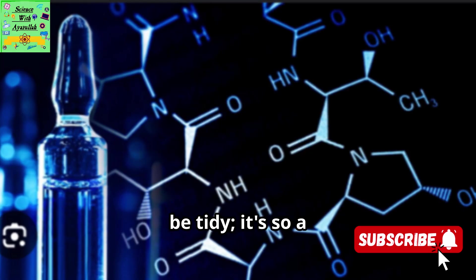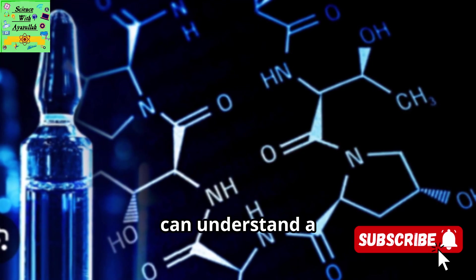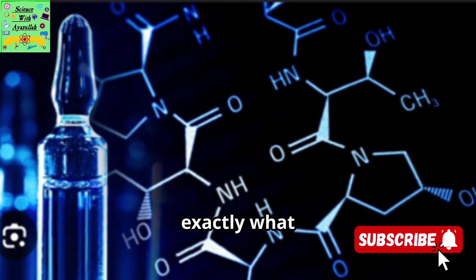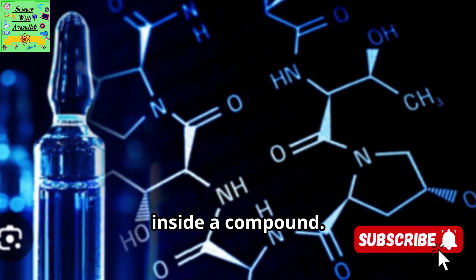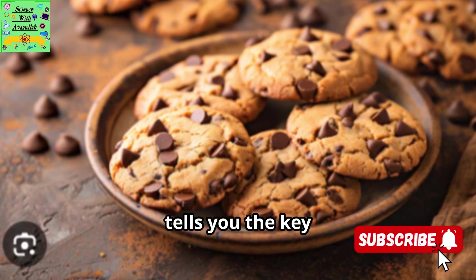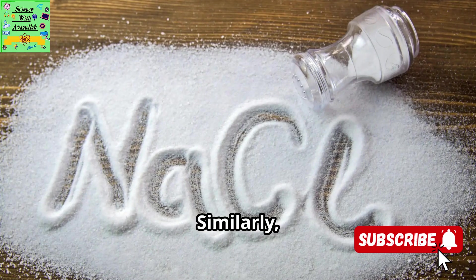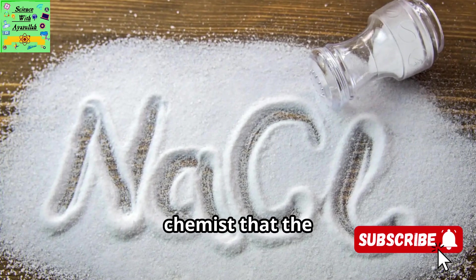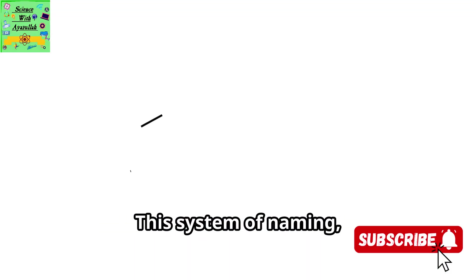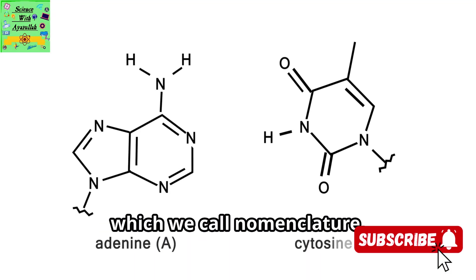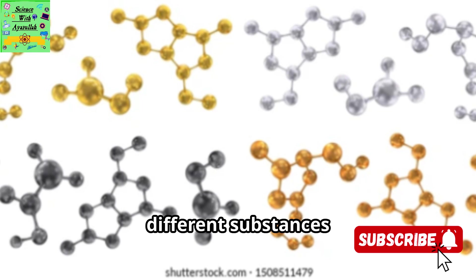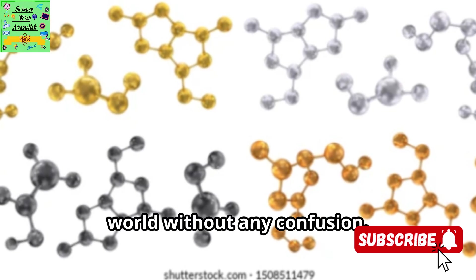This isn't just to be tidy. It's so a scientist in Tokyo can understand a scientist in Toronto perfectly. A chemical name is like a secret code that isn't so secret. It tells you exactly what ingredients are inside a compound. Think of it like a recipe. The name of a dish, like chocolate chip cookie, tells you the key ingredients you can expect to find. Similarly, the chemical name sodium chloride instantly tells a chemist that the compound is made from two specific elements, sodium and chlorine. This system of naming, which we call nomenclature, is a universal language. It allows us to write down, talk about, and understand the millions of different substances that make up our world without any confusion.